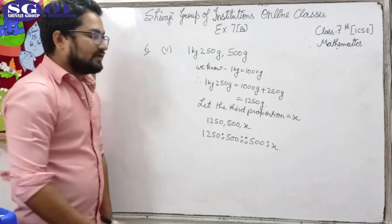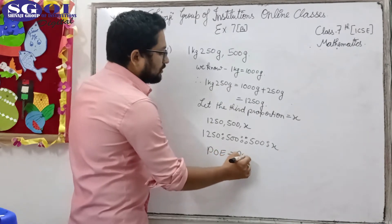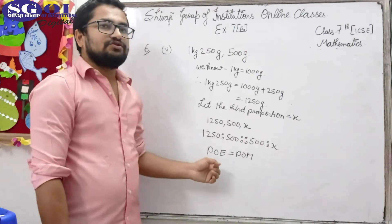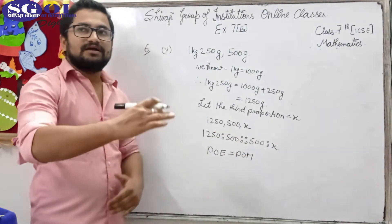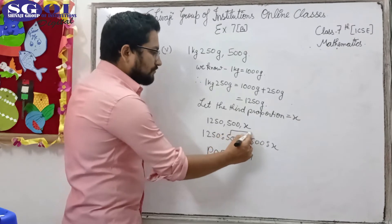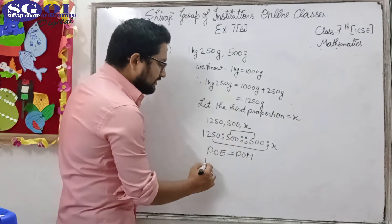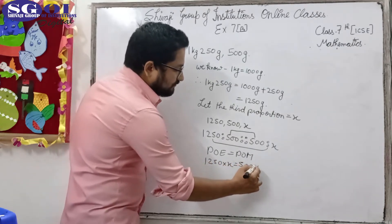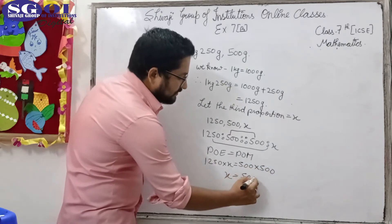We know that product of extremes is equal to product of means — and you will write this in full form, not in short form. So the product of extremes equals 1250 × x, and the product of means equals 500 × 500.